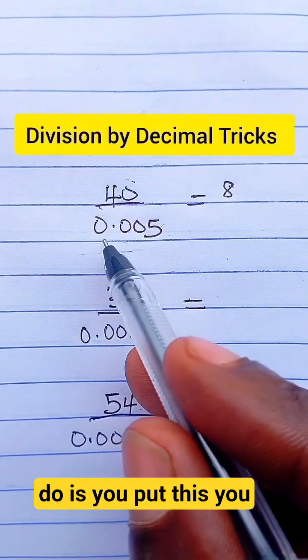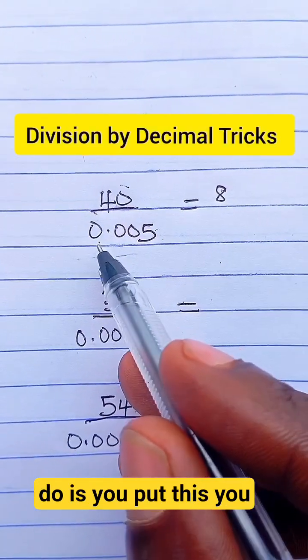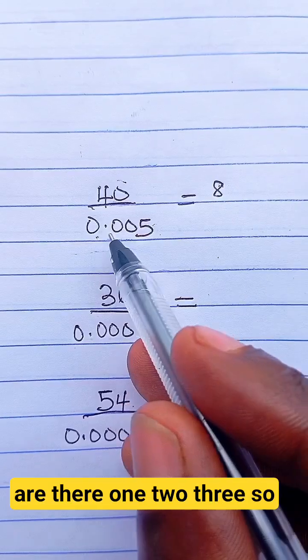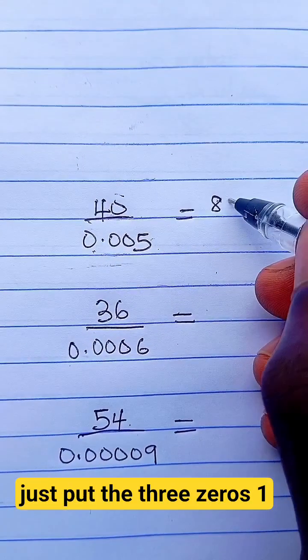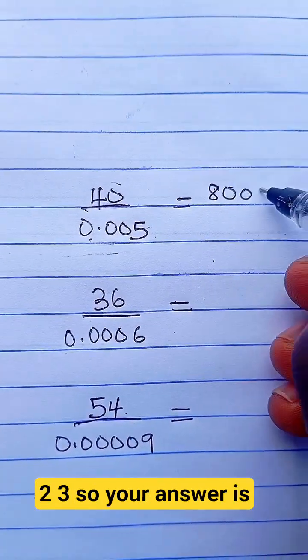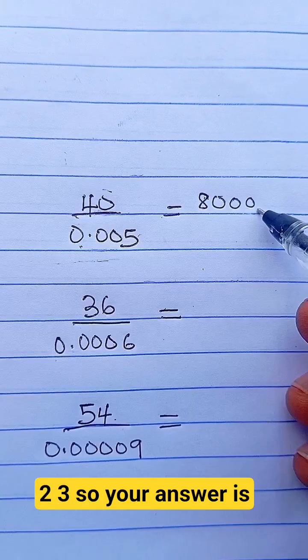Next, count these zeros - how many are they? 1, 2, 3. Now just put the three zeros: 1, 2, 3. So your answer is 8,000.